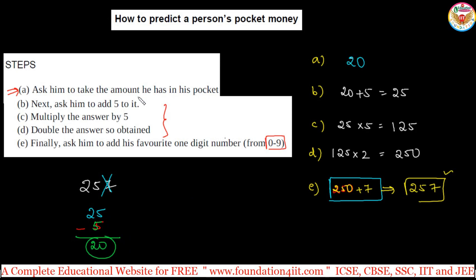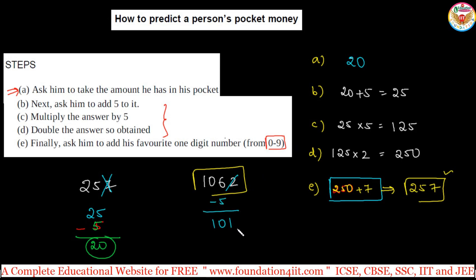For example, after doing all the calculations — adding 5, multiplying by 5, doubling, then adding any single digit — even if the result is 1062, just ignore the last digit and subtract 5 from the remaining number. You get 101, which was the original amount. This technique is great for building curiosity in mental calculation, so you don't need a calculator every time.